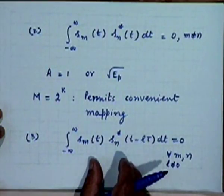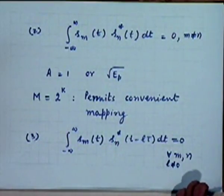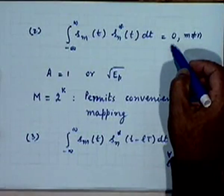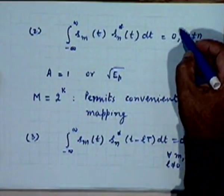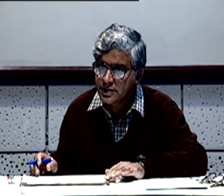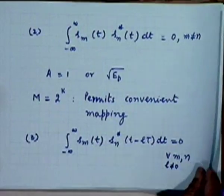This third condition is automatically satisfied when every waveform has a duration of exactly T seconds — translating it by a multiple of T means no temporal overlap, so the product is zero and the integral is automatically zero. This property is important for inter-symbol interference: a signal transmitted in one interval has no correlation with a signal transmitted in another symbol duration.